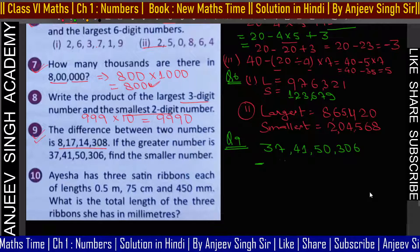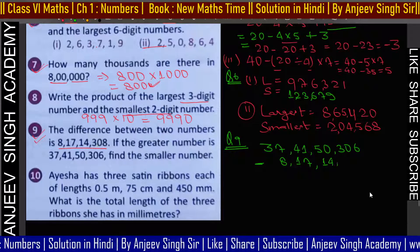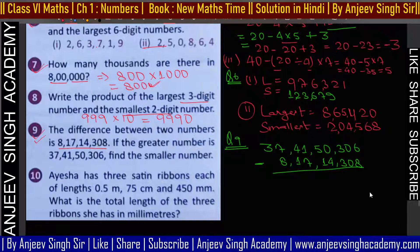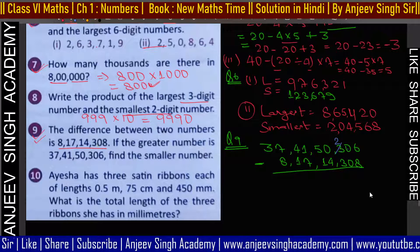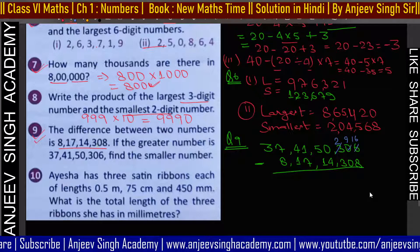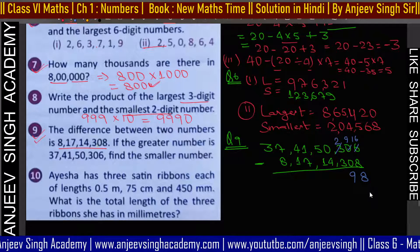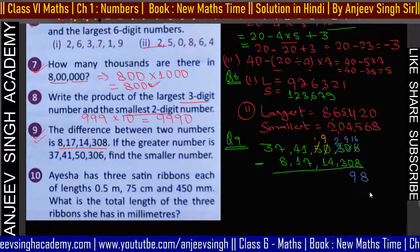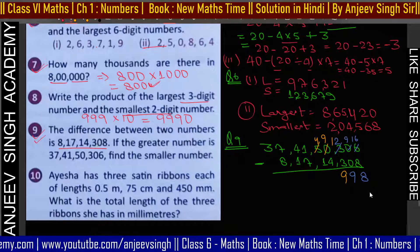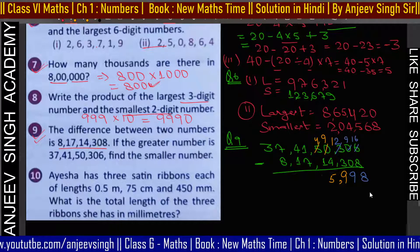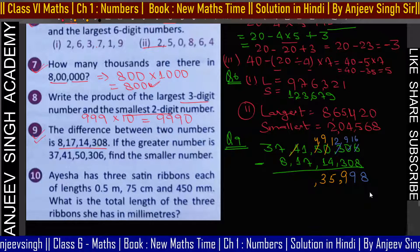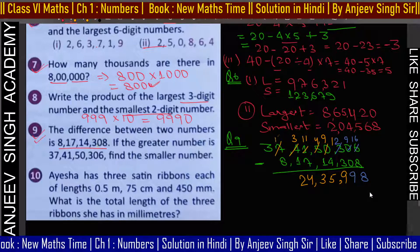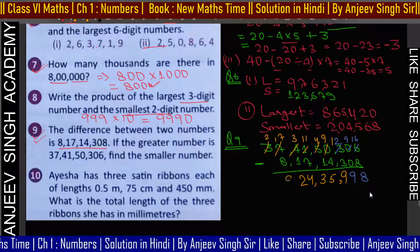8 crore 17,00,14,308 को minus करना है। 6 में से 8 minus नहीं होगा, carry लेगा — 3 देगा, 2 बनेगा, 9 बनेगा, 16 बनेगा। 16 minus 8 = 8, 9 minus 0 = 9। 2 से 3 minus नहीं होगा — carry मांगेगा, 5 देगा। यह 9 बनेगा, 4 बनेगा, 12 बनेगा। 12 minus 3 = 9, 9 minus 4 = 5, 4 minus 1 = 3। 1 में से minus नहीं होगा — carry करेगा, 11 हो जाएगा और 2 आ जाएगा।